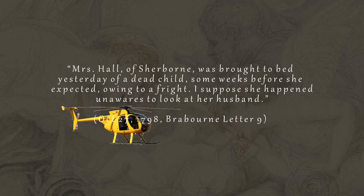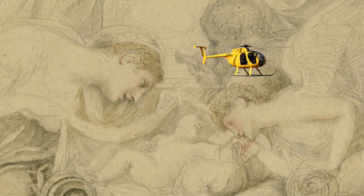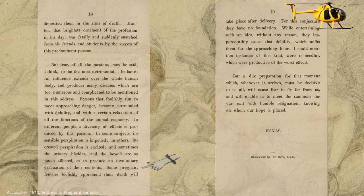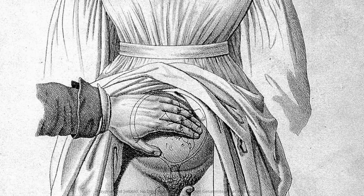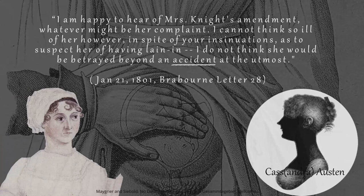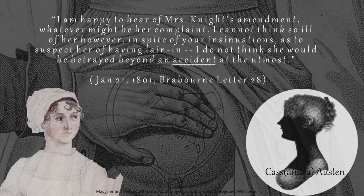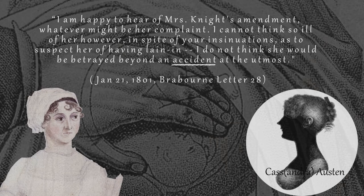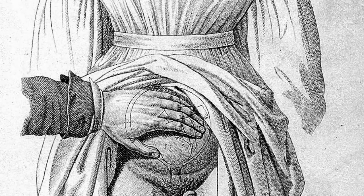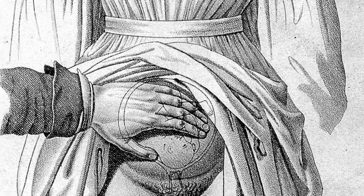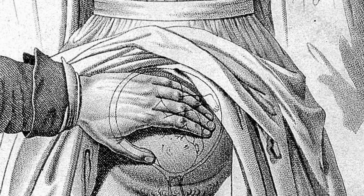First, not funny, Jane. Second, it was believed that a woman's emotional state could cause a miscarriage or stillbirth, or even cause her own death after childbirth by being apprehensive about dying during the pregnancy. And on the subject of pregnancy loss, there is the ever-controversial issue of abortion. Jane wrote: "I am happy to hear of Mrs. Knight's amendment, whatever might be her complaint. I cannot think so ill of her, however, in spite of your insinuations, as to suspect her of having lain in. I do not think she would be betrayed beyond an accident at the utmost." Lord Braeburn, with all of his Victorian rectitude, thought this is what Jane meant too, as he omitted that second sentence in the original publication of her letters.